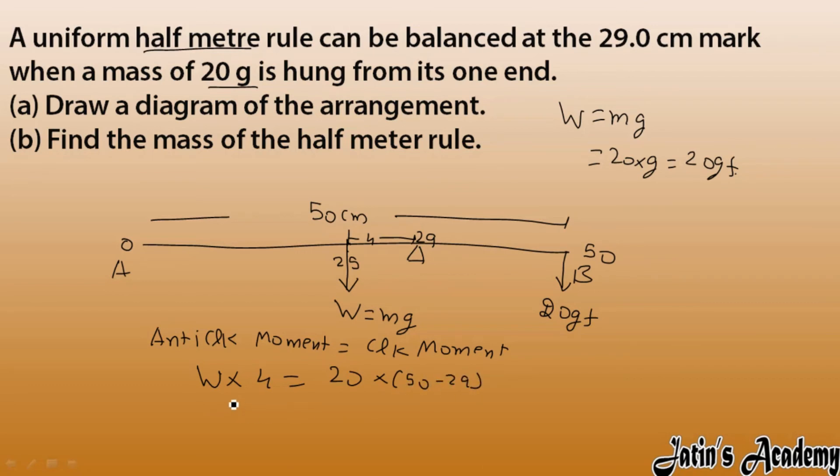So here I got weight is m into g, and here 20 gram force means 20 into g. And 50 minus 29, 50 minus 30 is 20, and 29 means 21. So here we have to cancel this g and g cancel out.